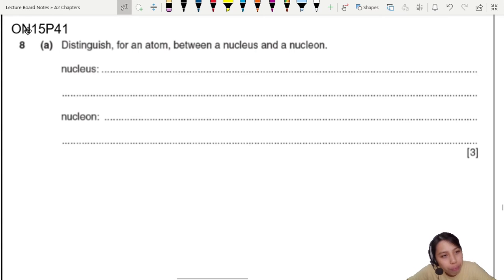October-November 2015, paper 4, variant 1, question 8. This is another radioactive question, so let's look at this nuclear physics chapter. Distinguish from an atom, what's a nucleus, what's a nucleon? Don't confuse both. Nucleus and nucleon are very, very different things.